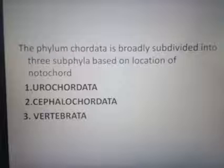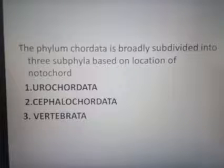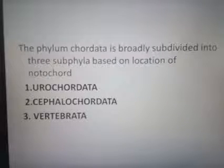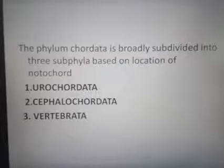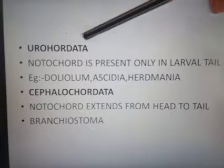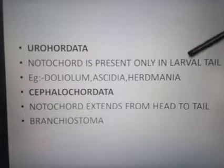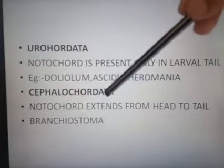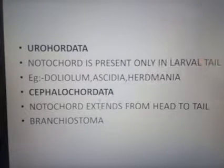The main features of Phylum Vertebrata: excretion and osmoregulation take place through the kidney, and locomotion occurs with appendages such as fins or limbs. Special sense organs are seen in Vertebrata. To summarize, Urochordata has the notochord present only in the larval tail; examples are Doliolum, Ascidia, and Herdmania. Cephalochordata has the notochord extending from head to tail; example is Branchiostoma.